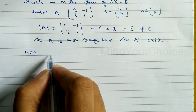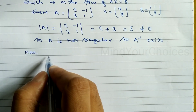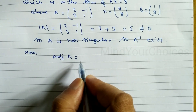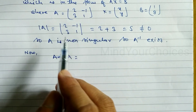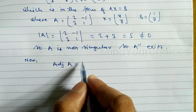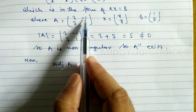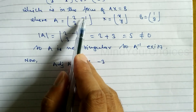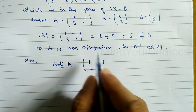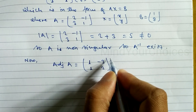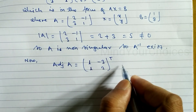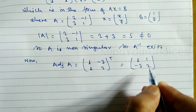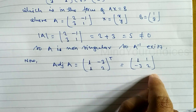Now we have to find the cofactors, or we can say the adjoint of A. The adjoint of A means the transpose of the cofactor matrix. The cofactor of 2 is 1, the cofactor of minus 1 is minus 3, the cofactor of 3 is 1, and the cofactor of 1 is 2. Taking the transpose gives us the adjoint: [1, 1; -3, 2].